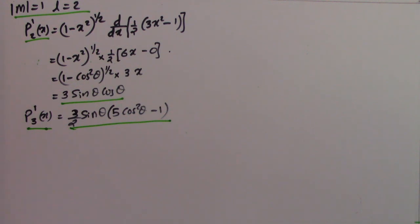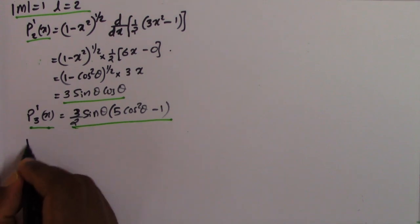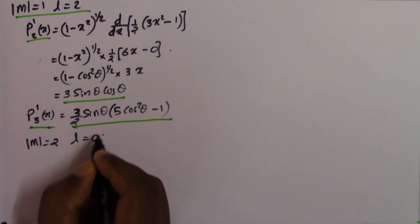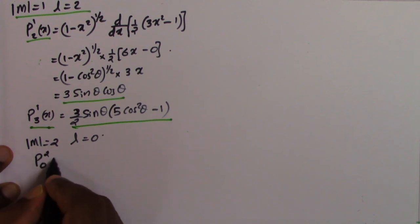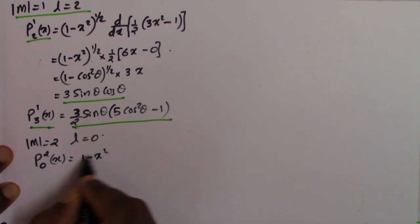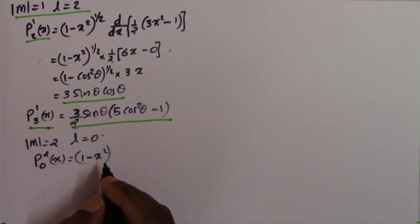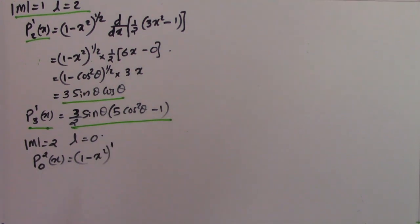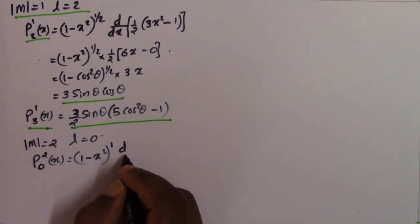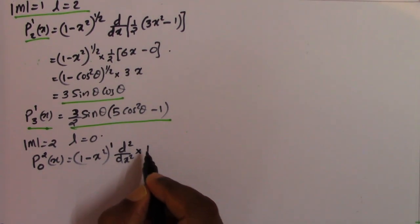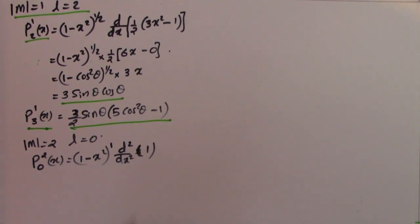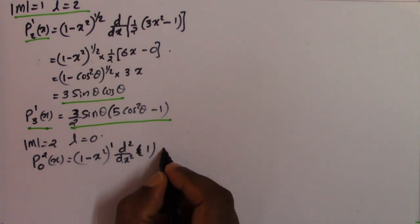Now let m=2. We can move further — m=2 and l=0. In this case P_0^2(x) equals (1 - x²) raised to m/2, where m/2 = 2/2 = 1, times d²/dx² of P_l(x). Here P_0(x) = 1, so d²/dx² of 1 equals 0. Therefore the entire function equals 0.